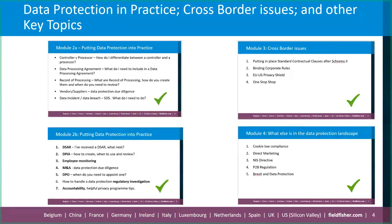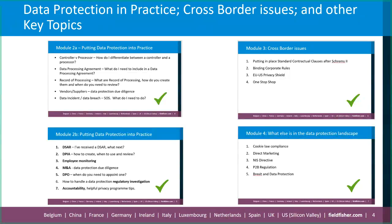We looked at cross-border issues. We're very much in a global world, yet jurisdictions have geographical boundaries, and given how technology has connected us globally, it's very important to know the regimes for how data flows are maintained in relation to standard contractual clauses, binding corporate rules, and the EU-US Privacy Shield — which, as you will have seen in the media, has now been invalidated under the Schrems 2 judgment — and also the one-stop-shop mechanism of the GDPR for how decisions are made amongst member states.